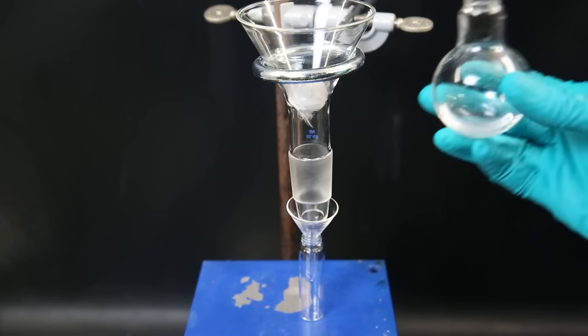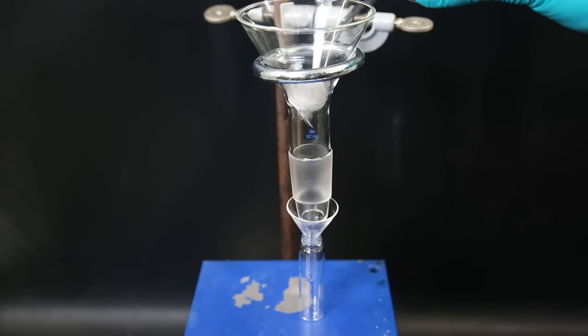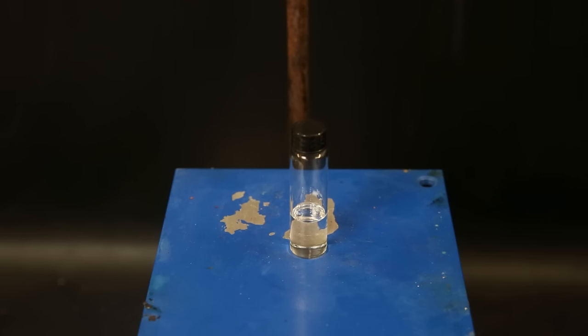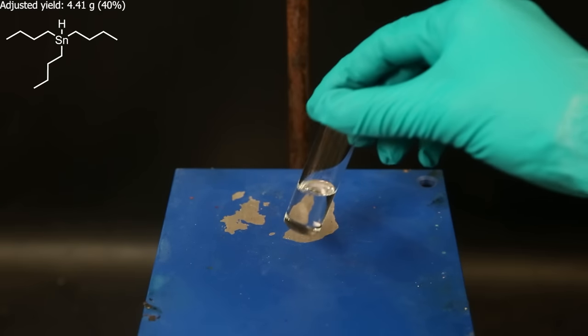So to get it out, I set up a funnel with a small bit of chemically resistant glass wool and filter it all through directly into a vial. When all of it has been filtered, I am left with a clear liquid. The final yield turned out to be 40%.